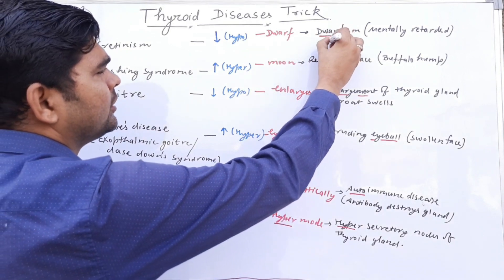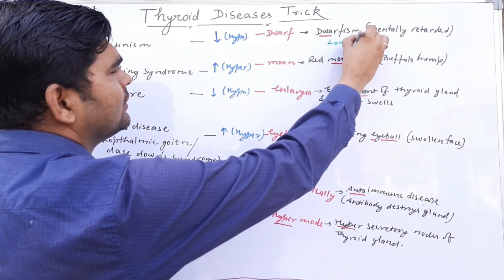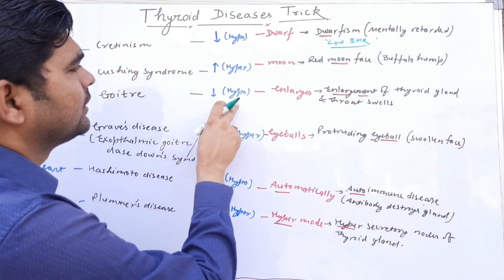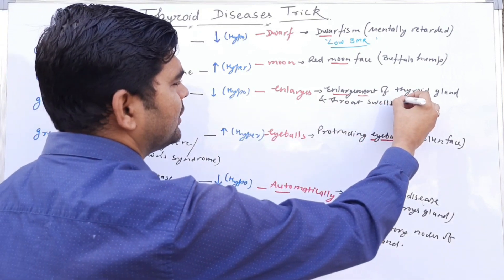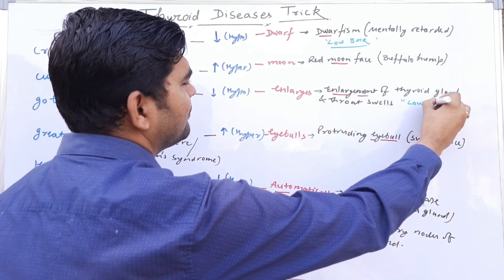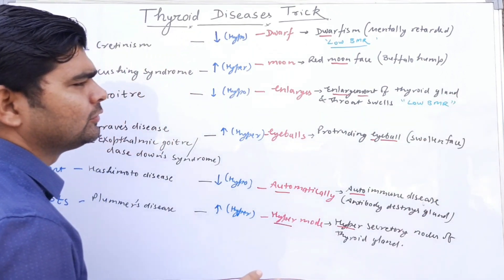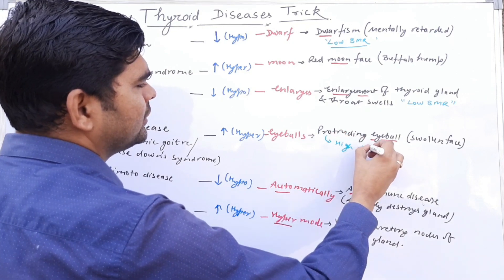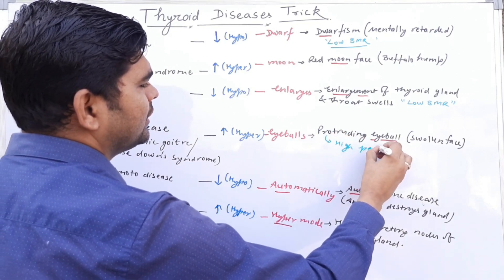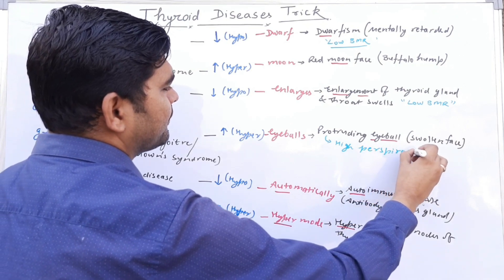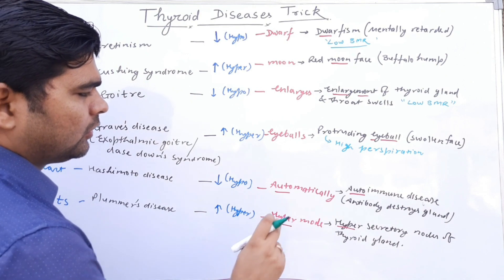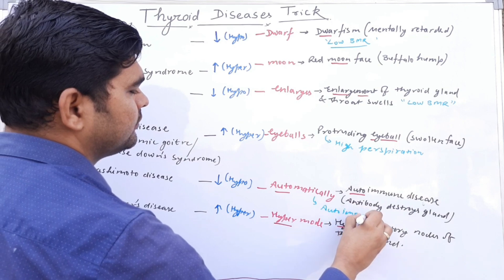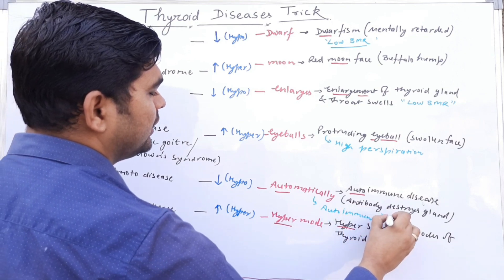An extra point to add: there is low BMR — basal metabolic rate — in Cretinism and also in Goiter. For Graves disease, it causes high perspiration; the body sweats a lot. Hashimoto disease is also called autoimmune thyroiditis. These are extra points which may be useful to you.